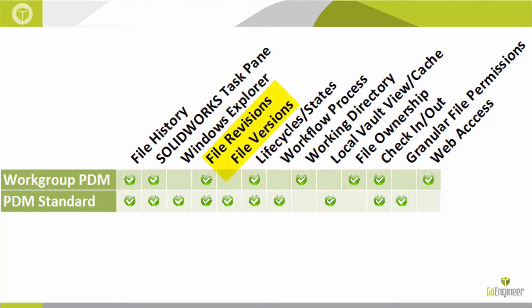Versions and revisions are also treated differently. In Workgroup PDM, every file iteration is considered a revision, and you may have a revision schema with two or three different components plus an optional working version designation. In PDM Standard, versions and revisions are decoupled: a version is created on each check-in if the file has changed, whereas a revision is a label applied by the workflow to the particular file version being released.